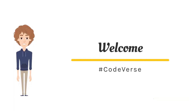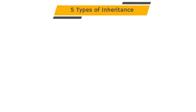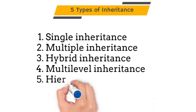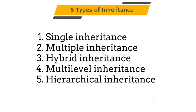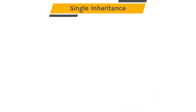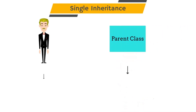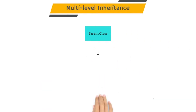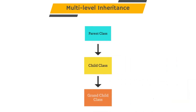Hello everyone, welcome to the Code Verse. In this video we will learn about types of inheritance. There are five types: single inheritance, multiple inheritance, hybrid inheritance, multi-level inheritance, and hierarchical inheritance. The first type is single inheritance — this is the simplest form, with one parent class and one child class. The child class can use properties of the parent class. This is the normal inheritance we saw in the last video.